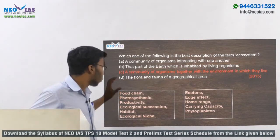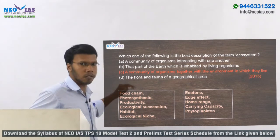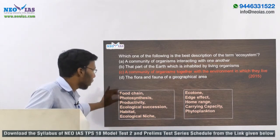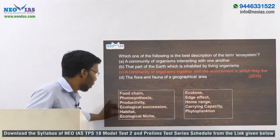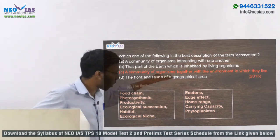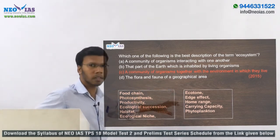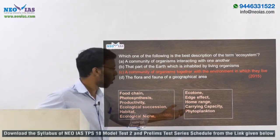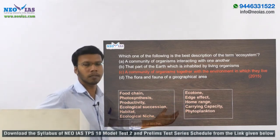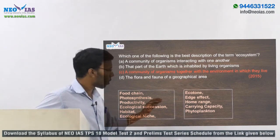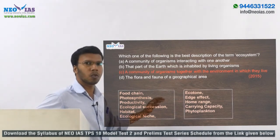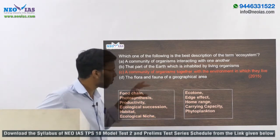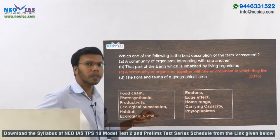The main topics to study under ecosystem are: food chain, concepts related to photosynthesis, productivity, ecological succession, habitat, ecological niche, ecotone, edge effect, home range, carrying capacity, and phytoplankton. Phytoplankton is important because it is a microorganism found in aquatic environments, and more than 50% of atmospheric oxygen is created by phytoplankton. You need to be thorough with all these topics.